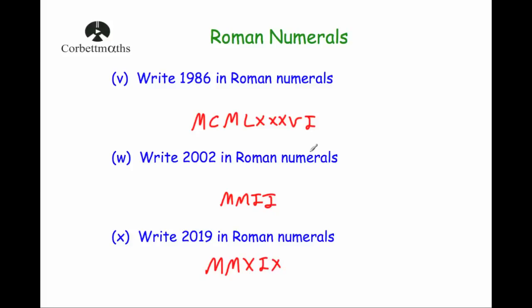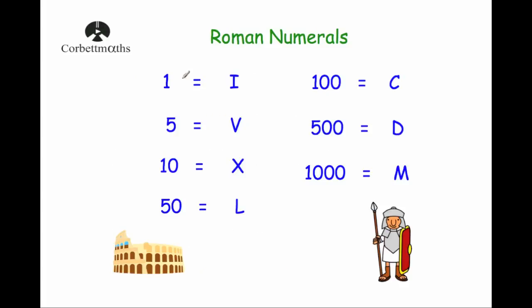And that's it — those are Roman numerals. The key thing to remember are the common ones which are the building blocks: one is I, five is V, ten is X, fifty is L, one hundred is C, five hundred is D, and a thousand is M. Then just make sure you work through from thousands, hundreds, tens, and units.